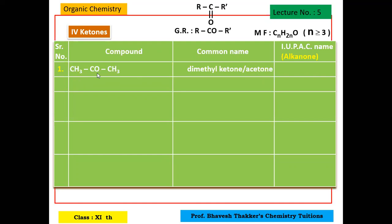We will do the common names first. There is methyl on both sides of the C=O (ketone group), so this ketone is called dimethyl ketone. Dimethyl ketone has a special name: acetone. Girls must know what acetone is — nail polish remover is nothing but acetone. So acetone is chemically dimethyl ketone.